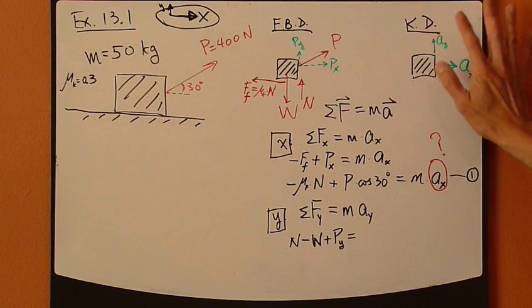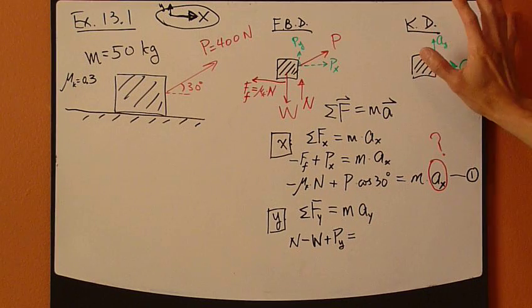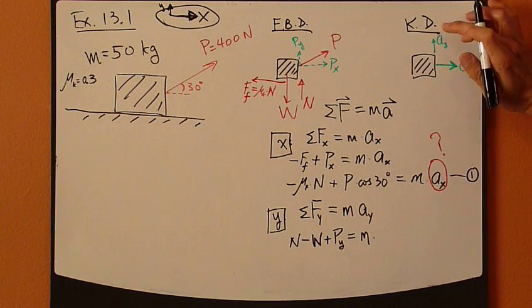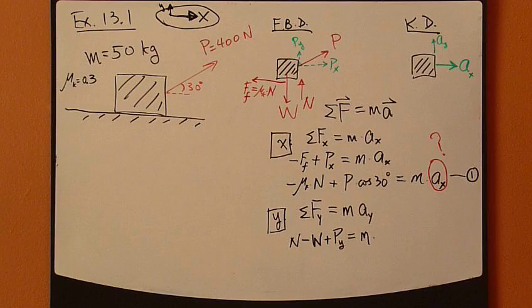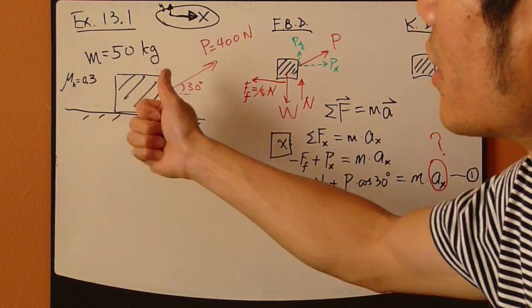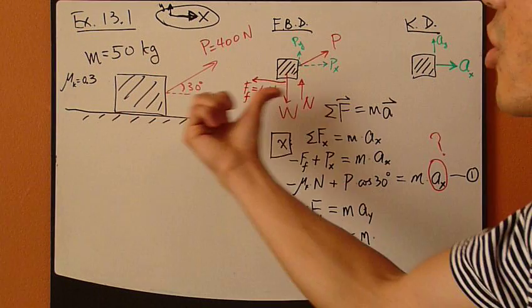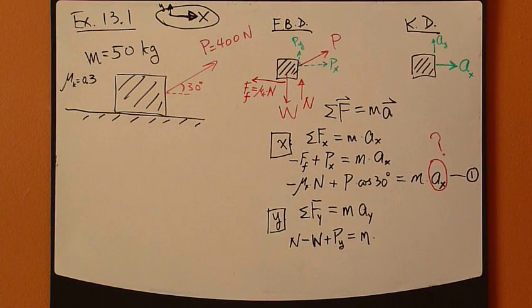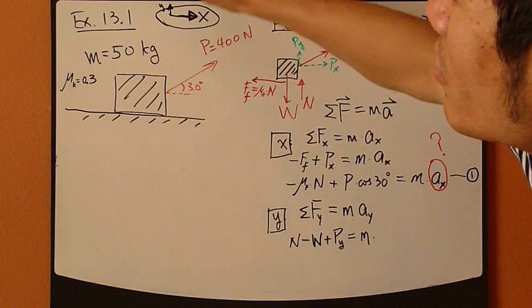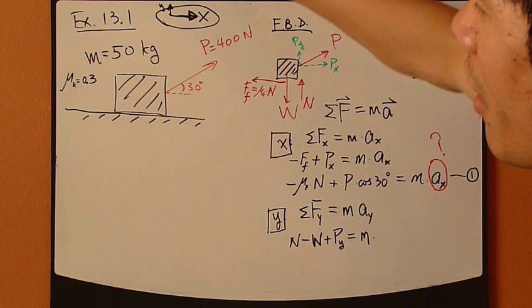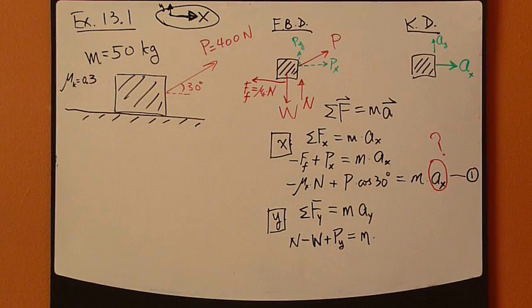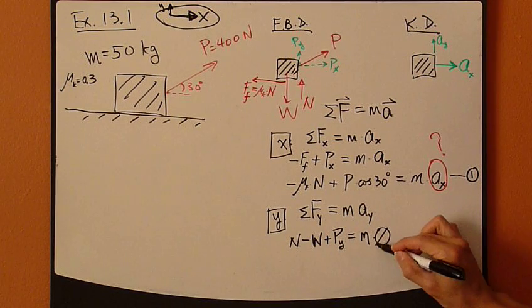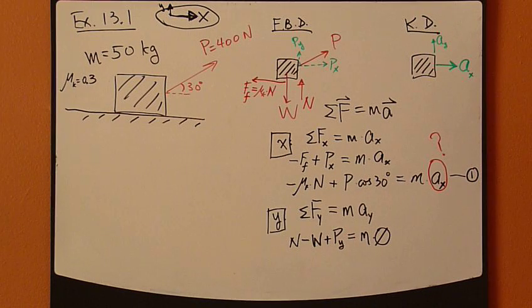Now, this resulting motion has no y component of acceleration. This crate is going to just move horizontally, sliding along this ground. So, it's not going to go upward or downward. Of course, there's no way to go downward. So, y component of acceleration is zero. So, right-hand side is zero altogether.